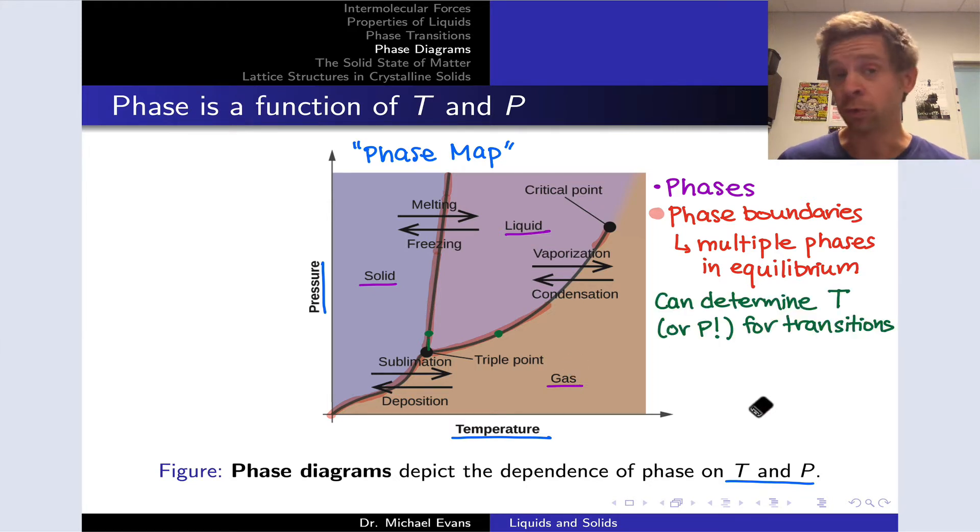Now what can we do with this phase map? We can determine at any point what the phase of a substance will be. Given conditions of pressure and temperature for a substance, we can determine the phase under those conditions. But we can do more with phase diagrams as well.